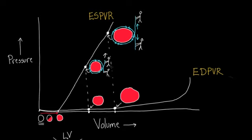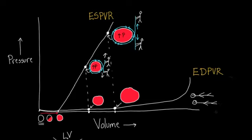Because those workers are yanking so hard, pulling so hard, you basically have a lot of pressure building up on the inside of the ventricle. On the end-diastolic curve, on the other hand, the muscle cells are completely relaxed — the workers are not yanking at all. As a result, you don't have any increase in pressure; you just have a very low pressure. That's the reason, even though the volumes are the same, there is a difference in pressure.